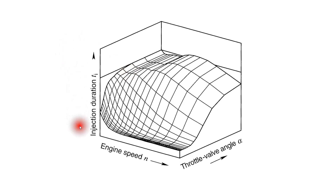On the vertical axis here we have injection duration — in other words, how long the injectors are open for. Here we have engine speed, and here we have throttle valve angle. So you can see that for any combination of engine speed and throttle opening, the ECU looks up what the appropriate injection duration is, and then operates the injectors in that way. Modern ECUs have hundreds and hundreds of these sorts of maps. If you're interested in a programmable ECU where you can set up the map, this is basically what you are building.